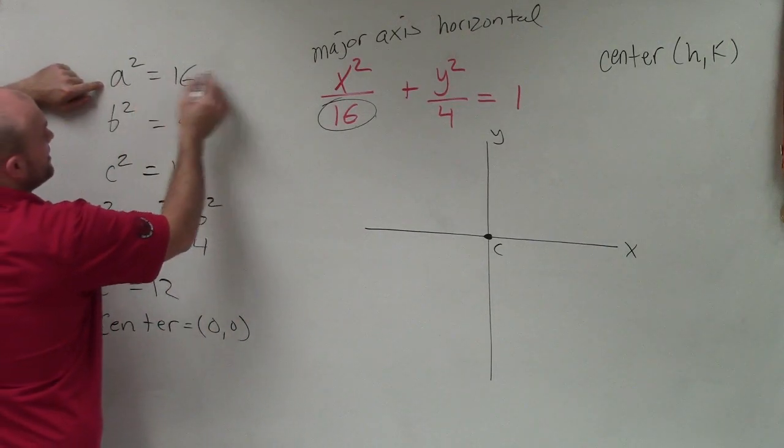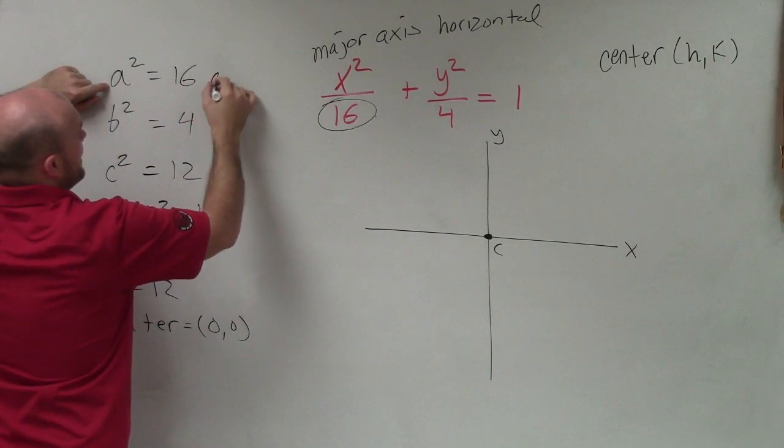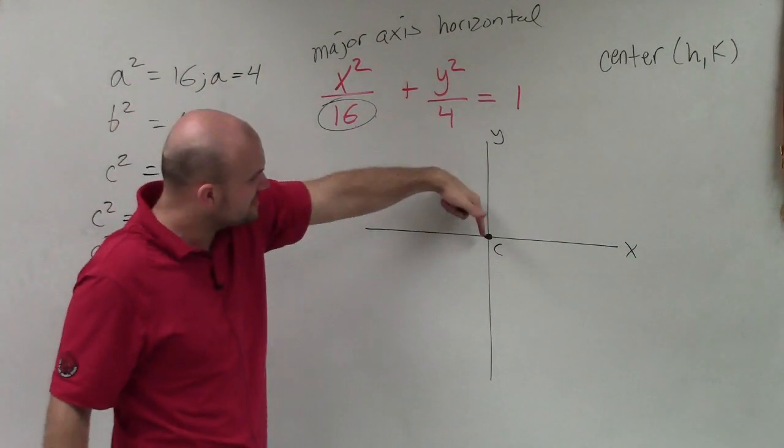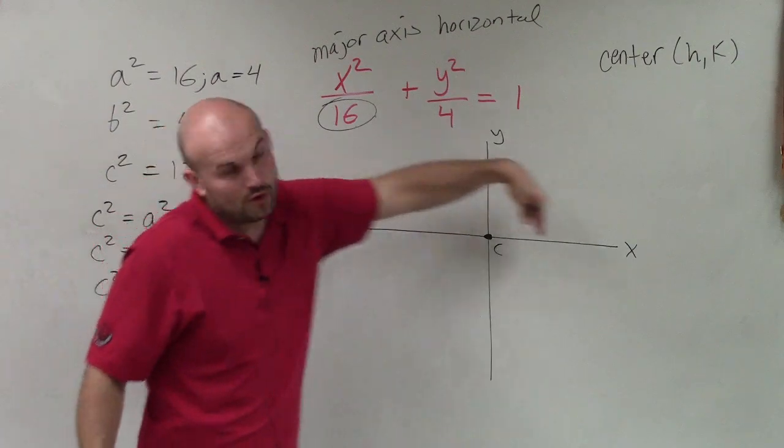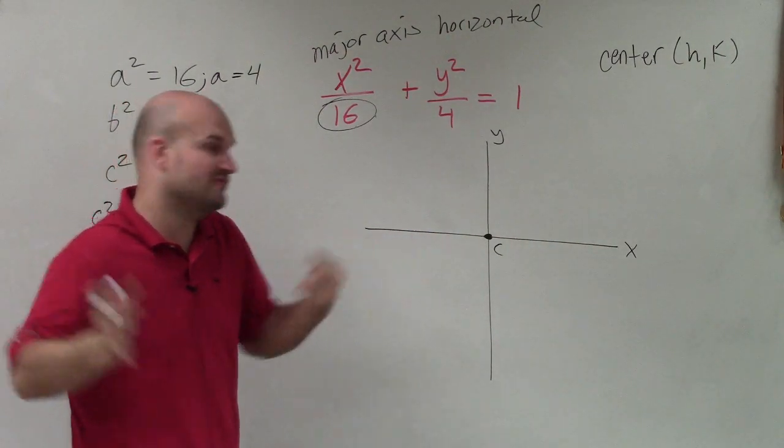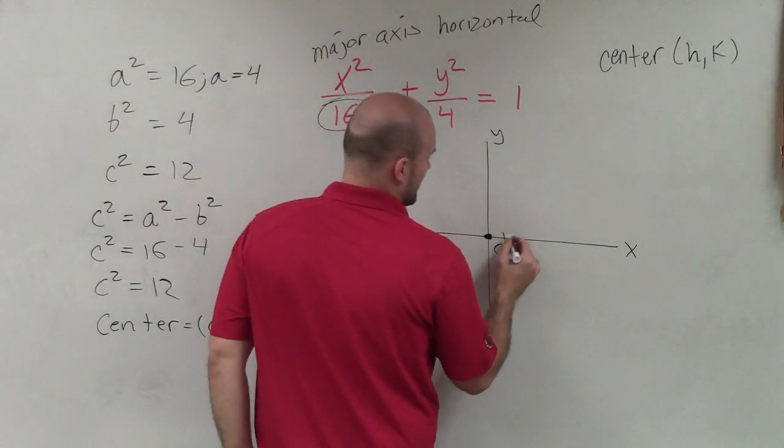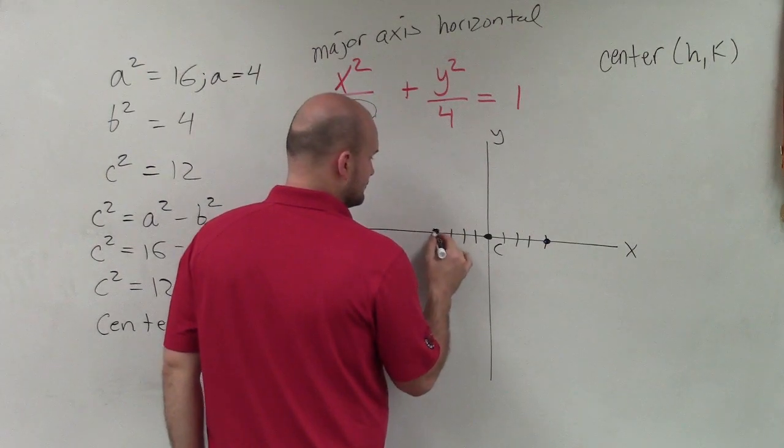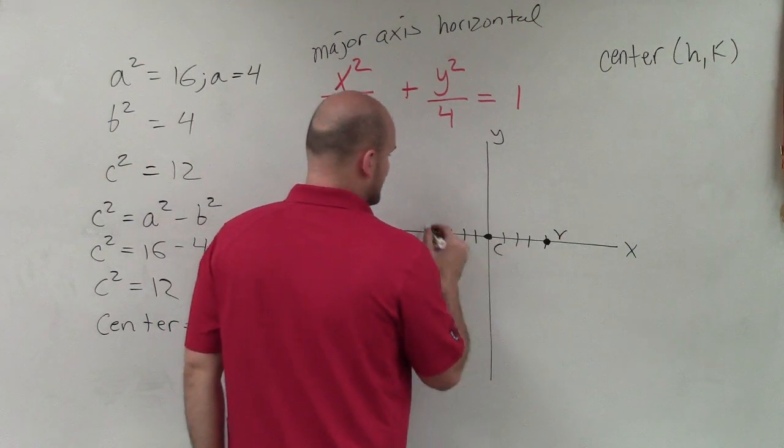So if a squared equals 16, I can now say that a is then equal to 4. So therefore, from the center, I'm going to go 4 units to the right and 4 units to the left, where the absolute distance would be 4. So therefore, I go 1, 2, 3, 4, and then left 1, 2, 3, 4. So those are my vertices.